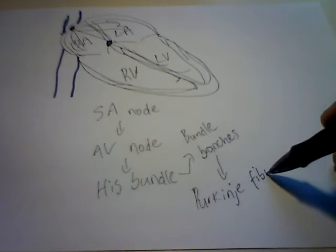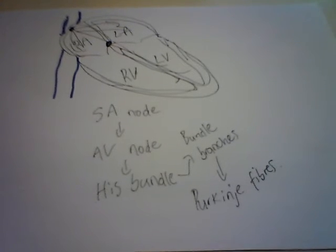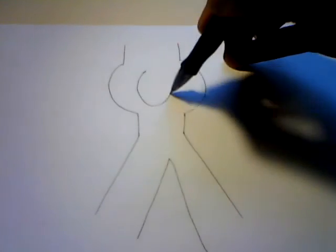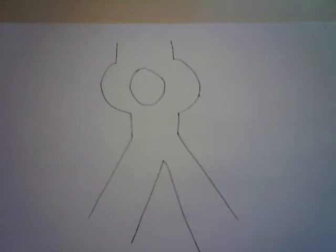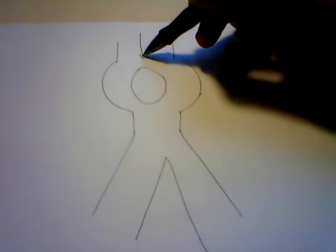That's the normal conduction: SA node, AV node, His bundle, bundle branches, and Purkinje fibers. Now let's see what happens during re-entry. Here's our normal beat from the SA node, our AV node, the His bundle, and bundle branches. For a re-entrant circuit to exist, we need two pathways joined together by conducting tissue.